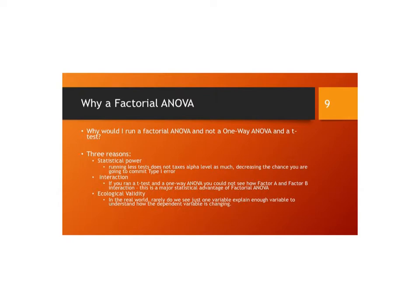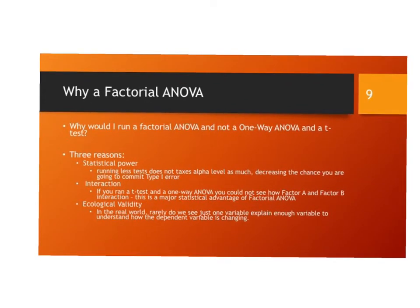Why would I choose to run a factorial ANOVA over doing multiple independent groups ANOVAs or t-tests? The first is statistical power. When you run less tests, it does not tax alpha as much, decreasing the chance that you're going to commit type 1 error. Additionally, you have the statistical advantage of an interaction. If you run a t-test and a one-way ANOVA, then you couldn't see how factor A and factor B interact. This is a major statistical advantage of ANOVA.